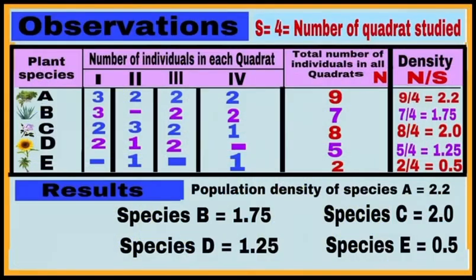After this, put all these values in the given observation table. Column one: plant species A, B, C, D, and E. Column two: number of individuals in each quadrat (quadrats 1, 2, 3, and 4). Column three: total individuals in all four quadrats. For example, species A total is 9, B is 7, C is 8, D is 5, and E is 2.